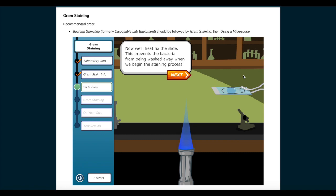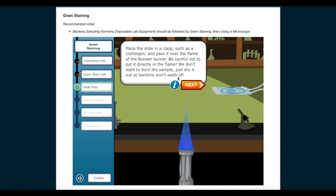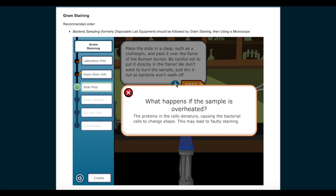Now, we'll heat fix the slide. This prevents the bacteria from being washed away when we begin the staining process. Place the slide in a clasp, such as a clothespin, and pass it over the flame of the Bunsen burner. Be careful not to put it directly in the flame. We don't want to burn the sample, just dry it out so bacteria won't wash off. What happens if the sample is overheated? The proteins in the cells denature, causing the bacterial cells to change shape. This may lead to faulty staining. Hold the slide over the flame to dry it out.